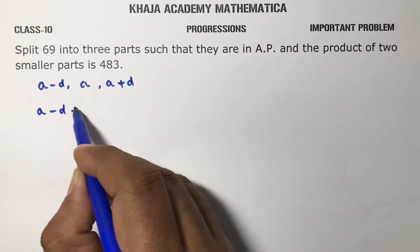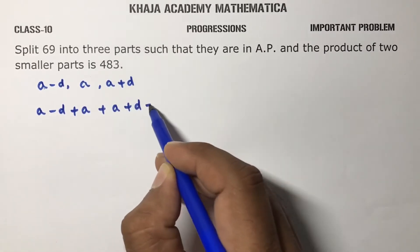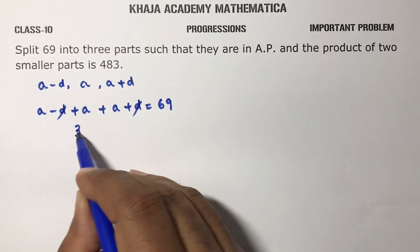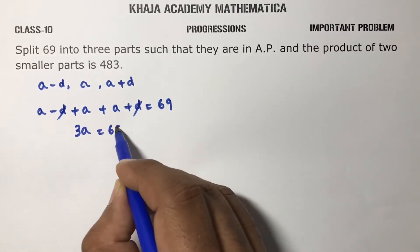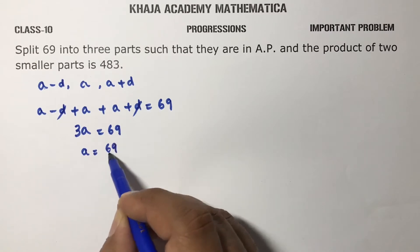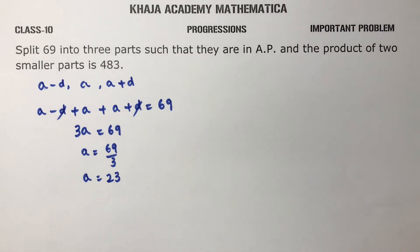So a minus d plus a plus a plus d is 69. Here minus d plus d cancel, three a equals 69, a equals 69 by 3, so a equals 23. The value of a is 23.